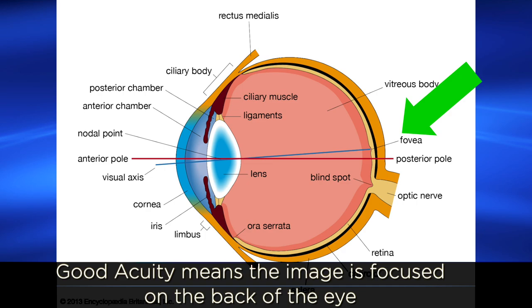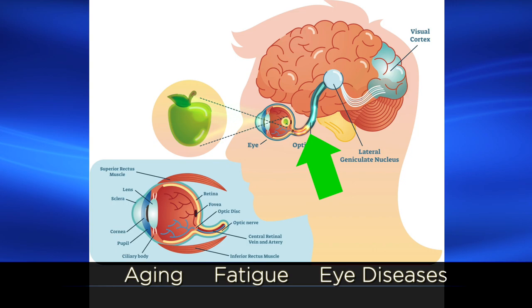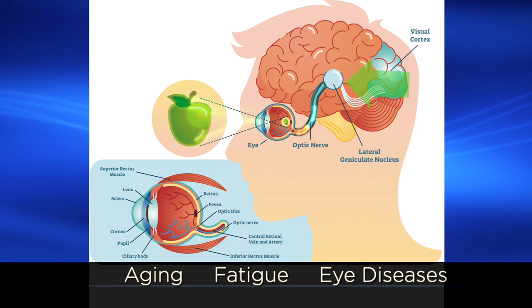But it is also important to remember that proper focus is not the only aspect of vision. The eye must be able to carry the image information from the retina to the brain. Many factors, including aging, fatigue, eye diseases, and other issues, can often affect this ability, even when a patient is in perfect focus and has 20-20 visual acuity.